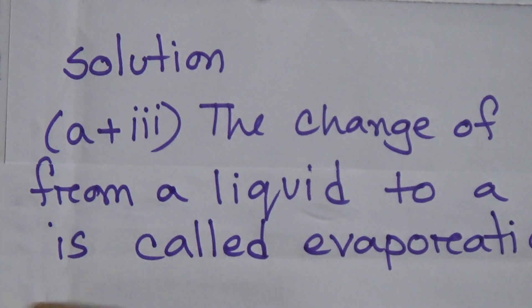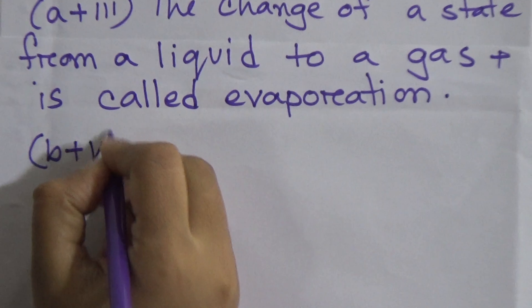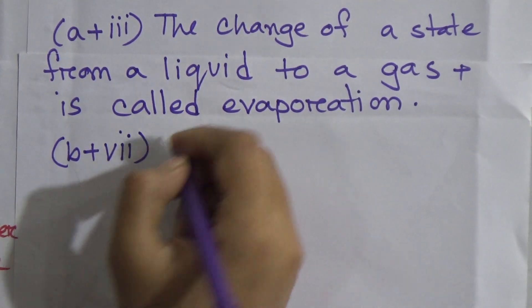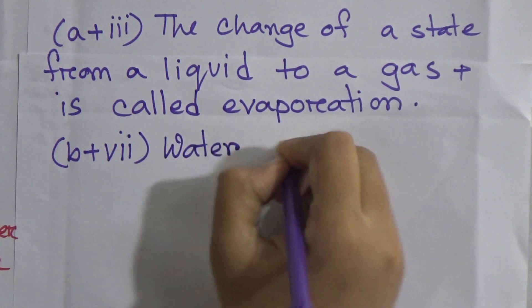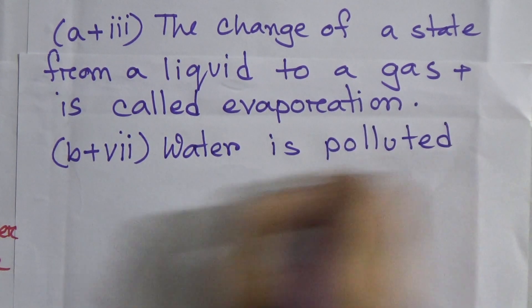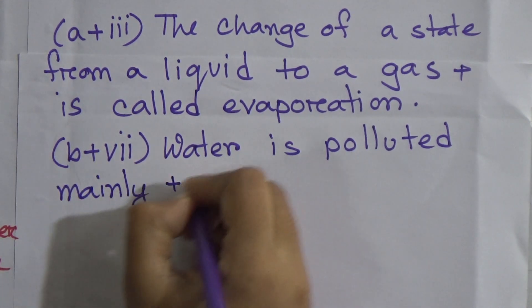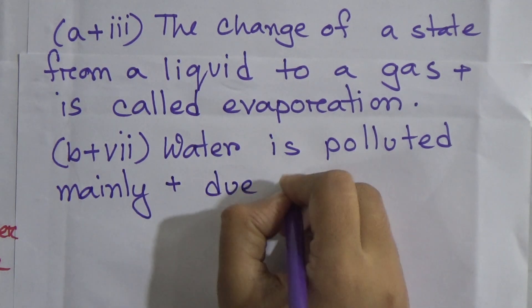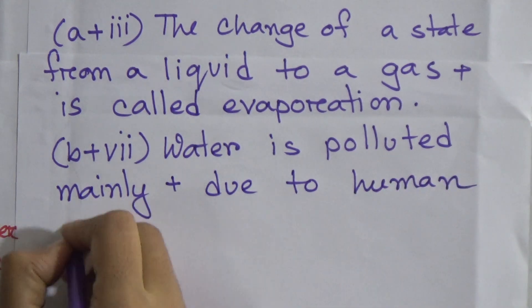Now come to the next one: B — water is polluted mainly — this will match with 7, due to human activity. Water is polluted mainly due to human activity.